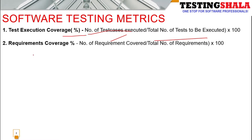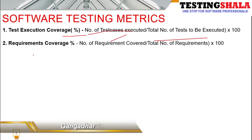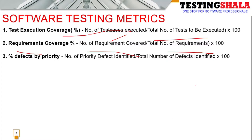The second metric is requirement coverage. Requirement coverage is how many requirements we have completed testing. The formula is: number of requirements covered divided by the total number of requirements, which gives the percentage of requirement coverage.